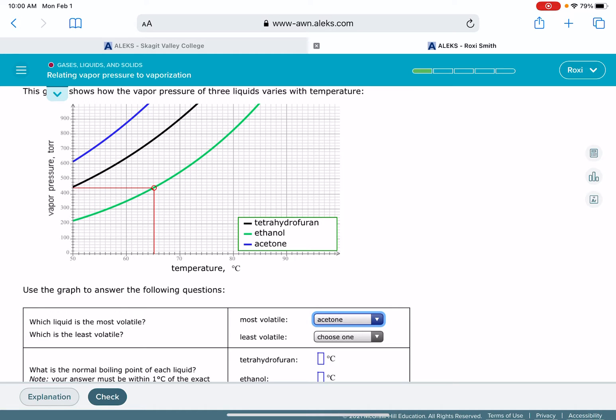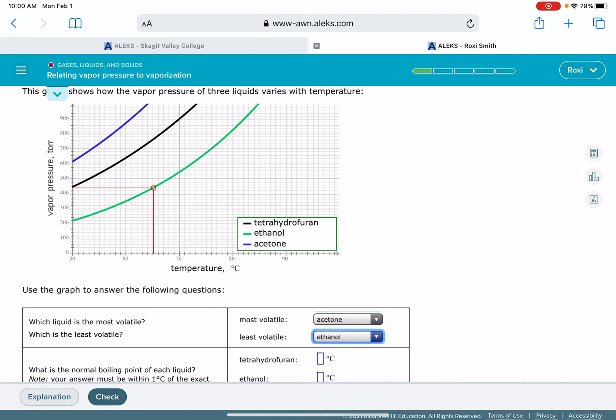The substance that is the least volatile, that's the one that's least willing to evaporate, and that's going to be the one that corresponds to the lowest vapor pressure, which on my graph is the green line, which is ethanol.